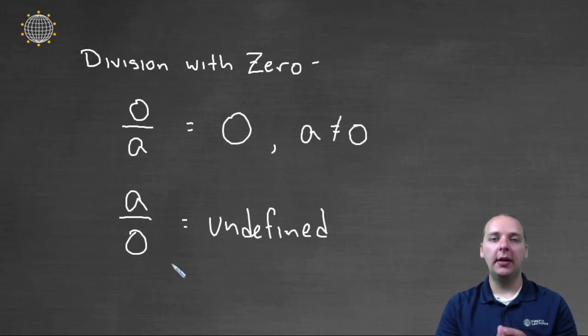So anyways, hopefully that helps clarify a little bit about how we multiply and divide by zero.